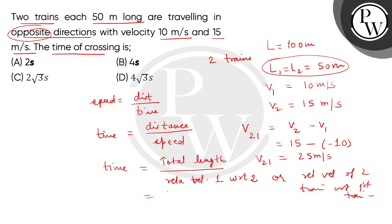This will be 100 meter divided by 25 meter per second. The correct answer for the time of crossing is 4 seconds. Hence the correct option is option B. Thank you.